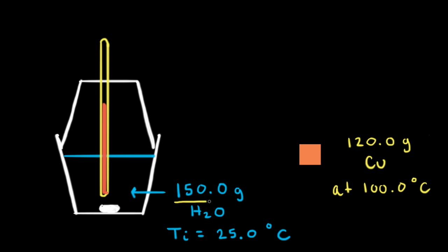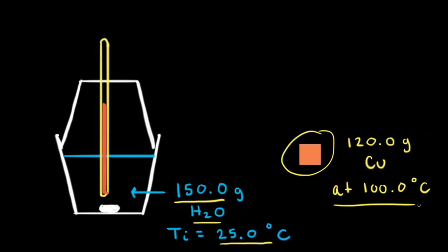Let's say we have 150.0 grams of water at an initial temperature of 25.0 degrees Celsius. Next, let's take a block of copper — 120.0 grams of it — and heat that block of copper to 100.0 degrees Celsius. Once the copper has reached that temperature, we add the copper block to our calorimeter.